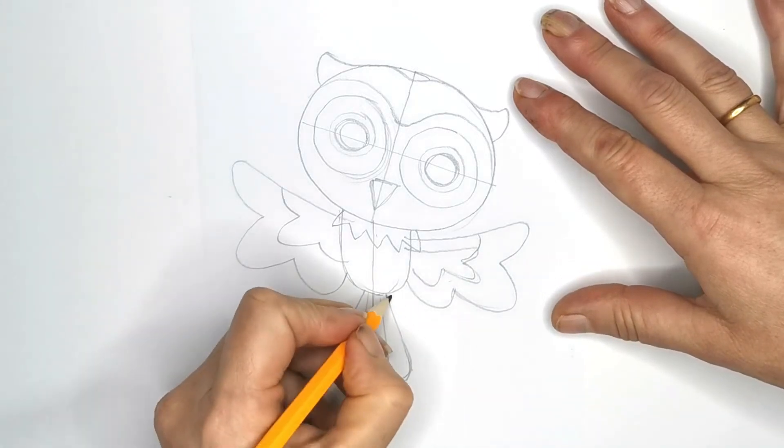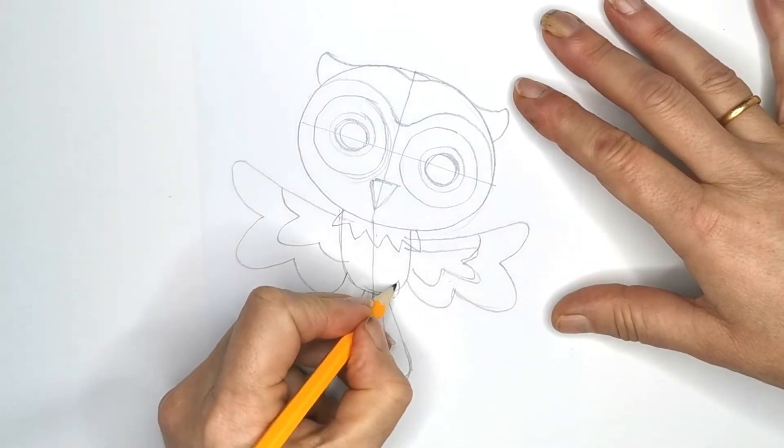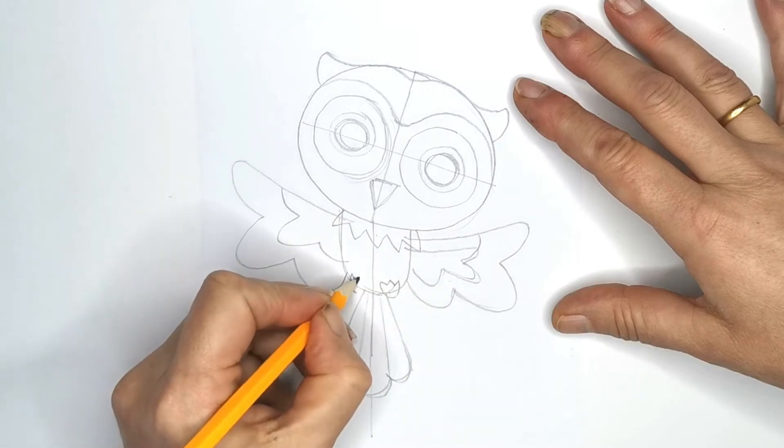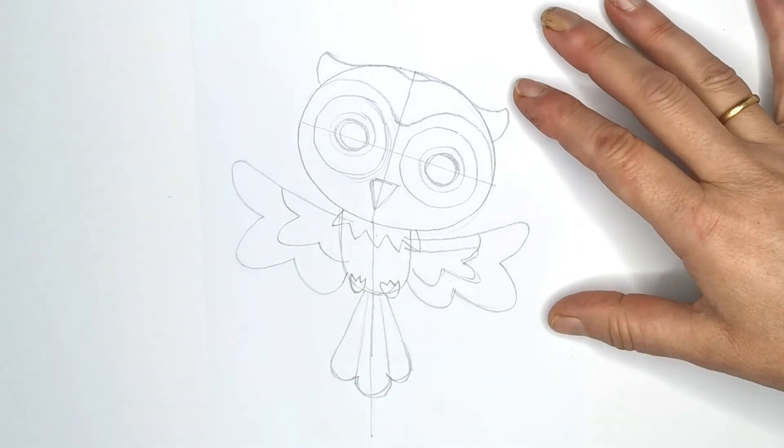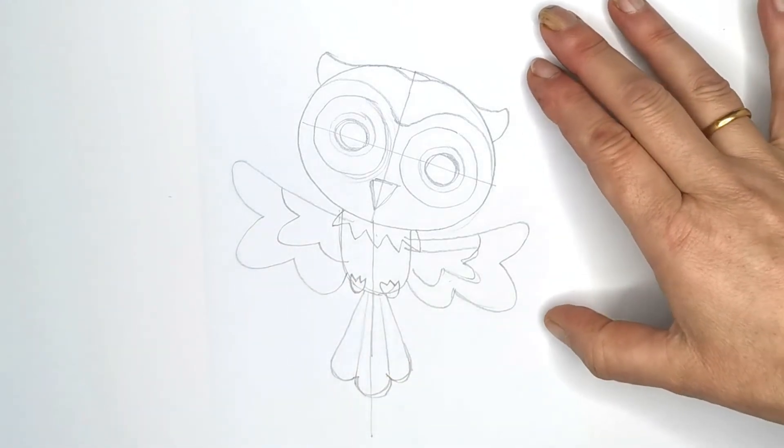Okay, we've nearly finished drawing this guy out. Let's give him some little feet. We're making him fly by putting his feet at this sort of angle. Look, if we'd put them the other way around, he could have been resting on a branch.